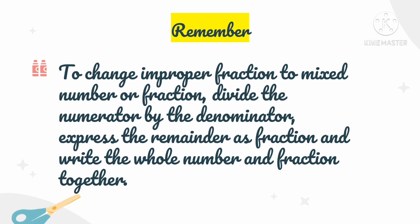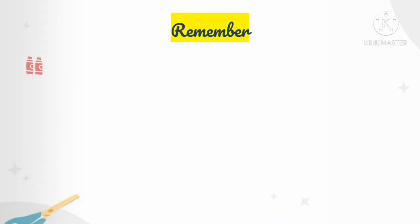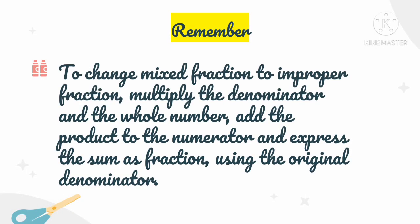As we have observed from the different exercises, improper fractions and mixed fractions are related and can be changed to each other. To change an improper fraction to a mixed number: divide the numerator by the denominator, express the remainder as a fraction, and write the whole number and fraction together. On the other hand, to change a mixed fraction to an improper fraction: multiply the denominator and the whole number, add the product to the numerator, and express the sum as a fraction using the original denominator.